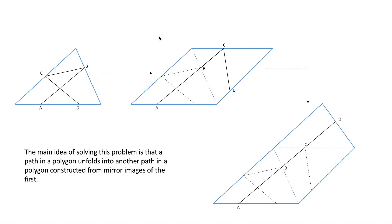Now I'll show you what we need to construct these rooms. The first thing we need to know is this: a path inside a polygon unfolds into another path in a polygon constructed from mirror images of the first.